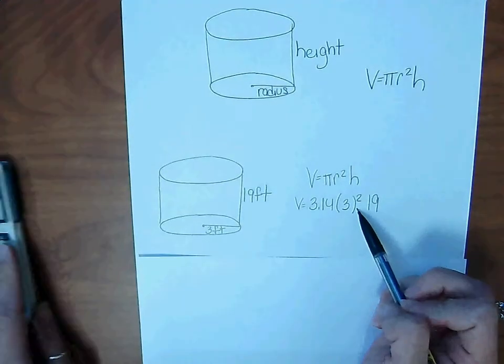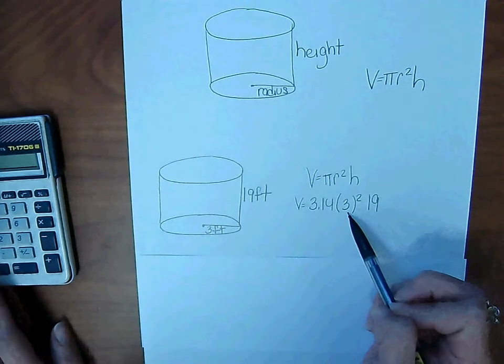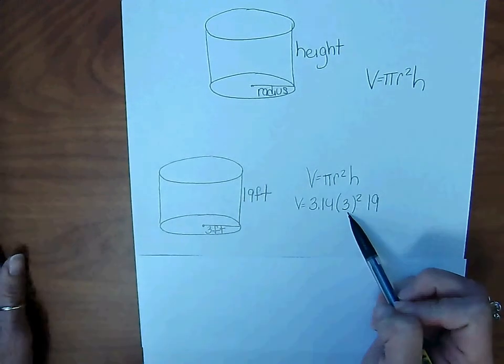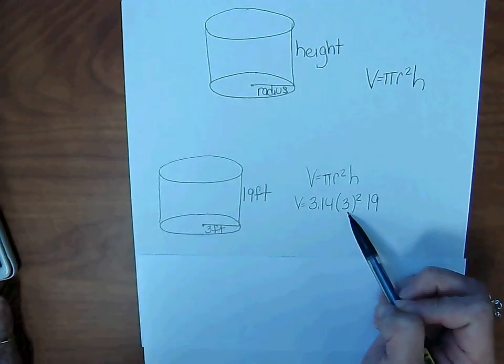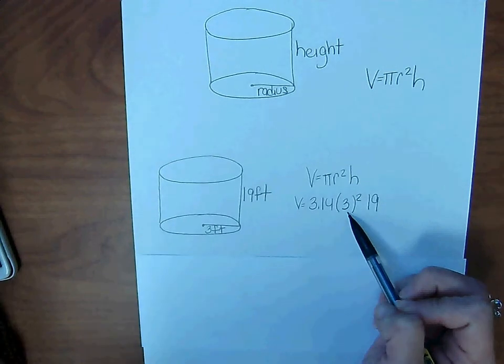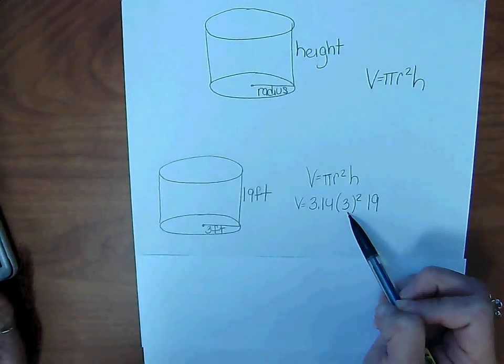Remember, squared means to take the radius and multiply it by itself. So we're going to do 3.14 times 3 times 3 times 19.